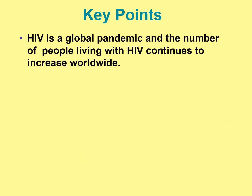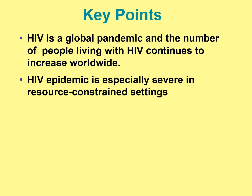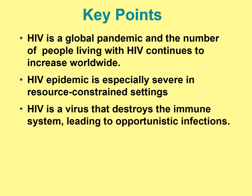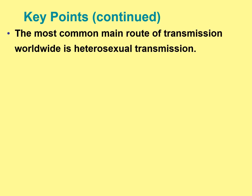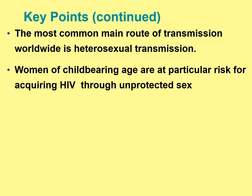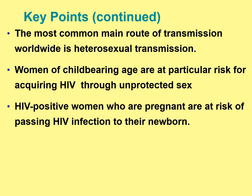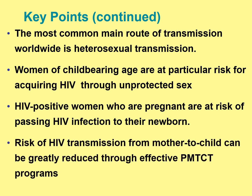HIV is a global pandemic and the number of people living with HIV continues to increase worldwide. The HIV epidemic is especially severe in resource-constrained settings. Progression from HIV to end stage varies from person to person and may take more than 10 years. The most common route is heterosexual transmission. Women of childbearing age are at particular risk, and HIV-positive women are at risk for passing HIV to their newborn. Risk of transmission from mother to child can be greatly reduced through effective programs.